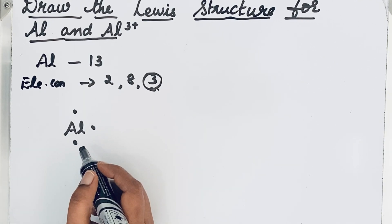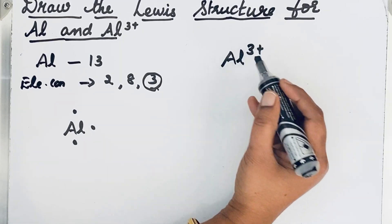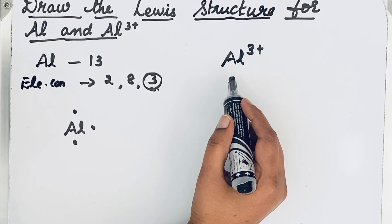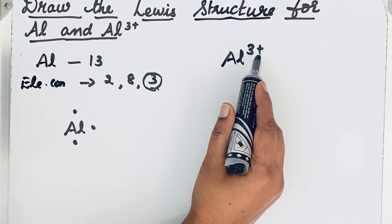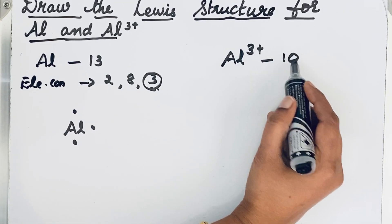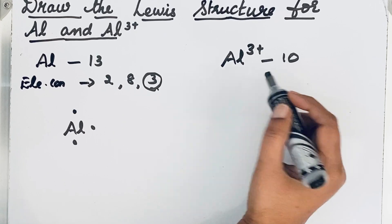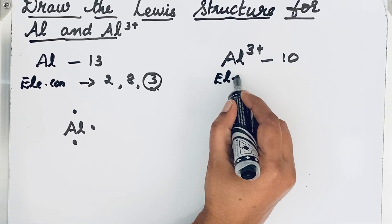Now let us see how to write for Al³⁺. Al³⁺ is a cation. Cations are formed whenever electrons are lost. Here it is 3+, that means 3 electrons are lost, so only total 10 electrons. Let us write electronic configuration.